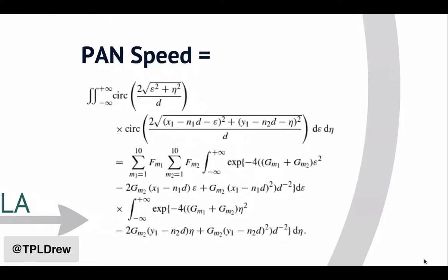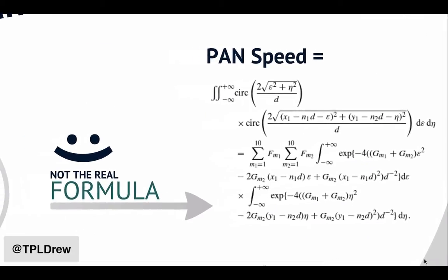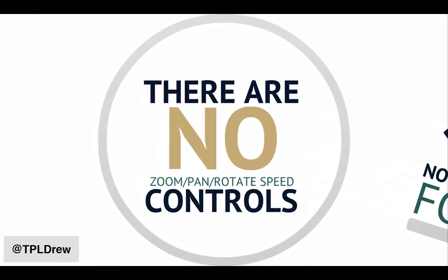The people at Prezi are really smart people. They've come up with a genius formula that actually changes based on where it is on the stage — exactly how it's going to move, how fast it's going to get there, how far the zoom is, and what the rotation velocity is. The formula looks something like this. I should point out that this is not the real formula — I just found one online and put it in my Prezi presentation. But the key is they've really worked on this. It's actually changed since 2009 when I first started using it — the speed, velocity, and intensity of the zooming, panning, and rotation has changed. And there are no zoom, pan, or rotate speed controls.